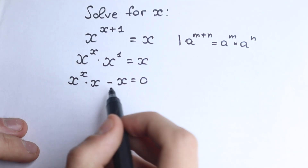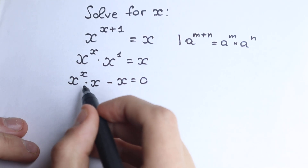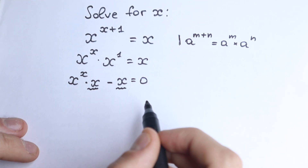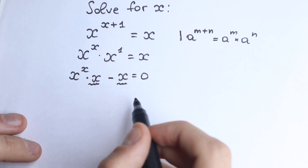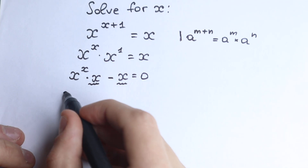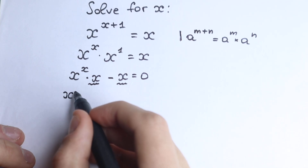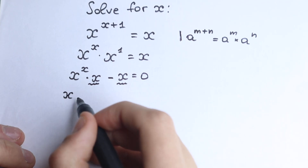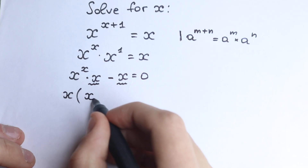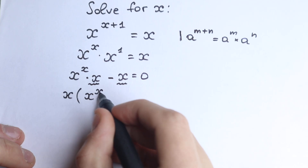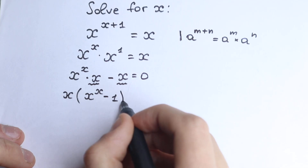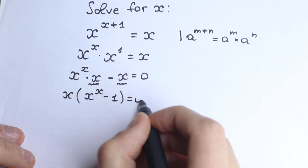Let's look at this expression. We have x right here and x right here, so we can easily factor out x. So we have x times, in parentheses, x to the power x minus 1, equal to zero.